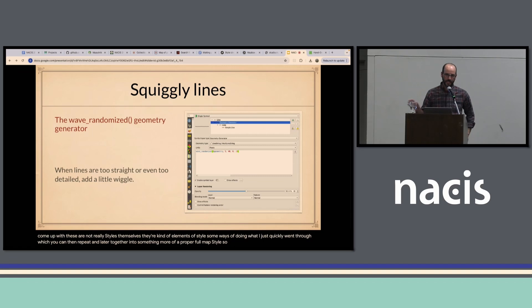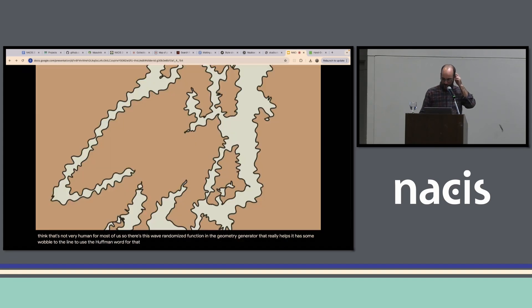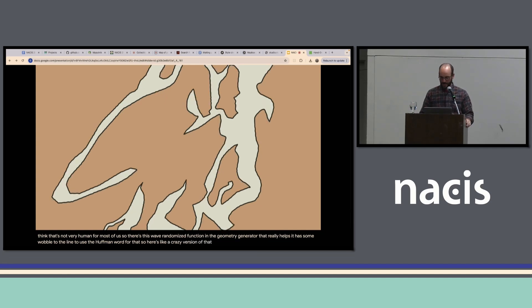So for one thing, straight lines are not allowed. I think that's not very human for most of us. So there's this wave randomized function in the geometry generator that really helps. It adds some wobble to the line to use the Huffman word for that. So here's the crazy version of that and something a little bit more subtle.